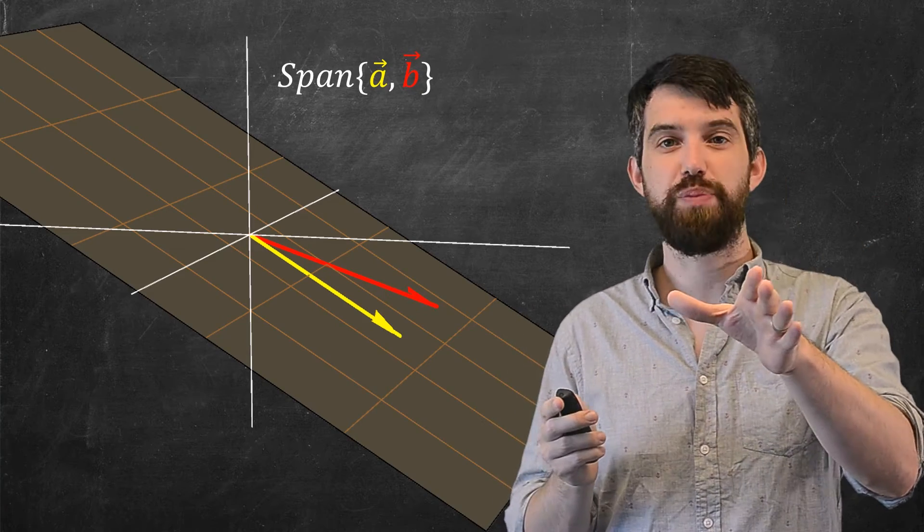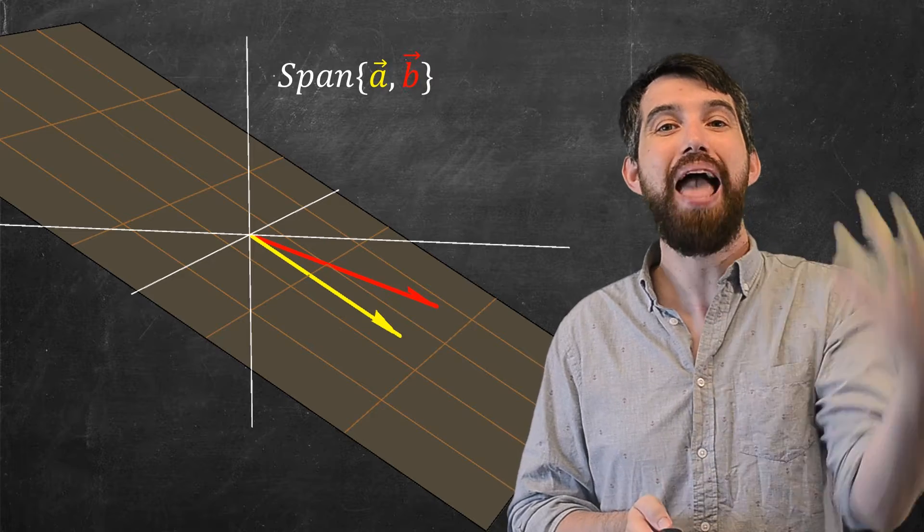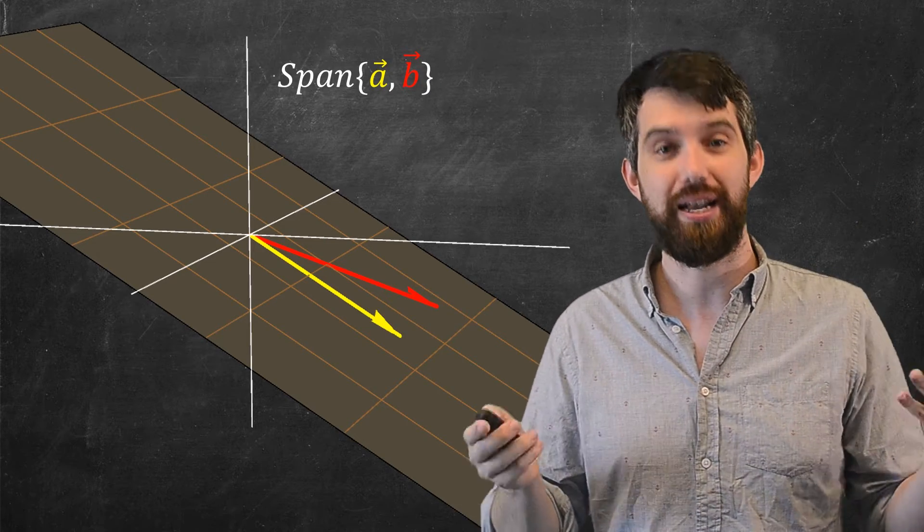We've seen the span of two vectors before, but let's take a closer look and investigate whether the span of a couple of vectors is going to be a subspace.